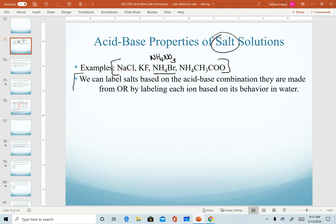There are two ways that we can label or predict pHs of salts. When I say label, I mean that you want to try to identify the type of solution. So before we did strong acid, strong base, weak acid, weak base. Now when we're working with salts, we want to know if each salt is acidic, basic, or neutral. We can do that by identifying the combination of acid and base that made the salt, or we can label each ion based on its behavior in water.